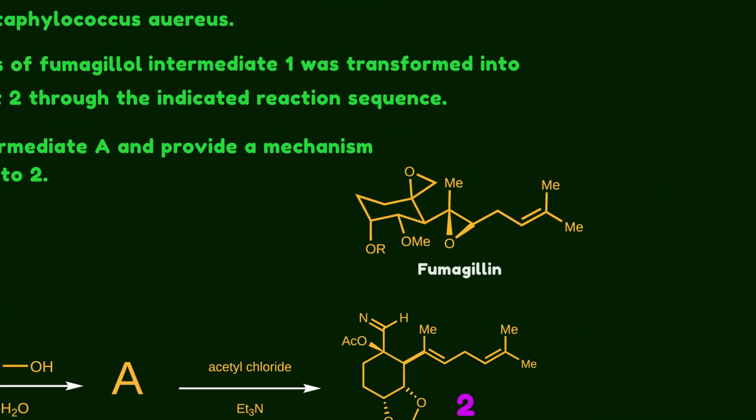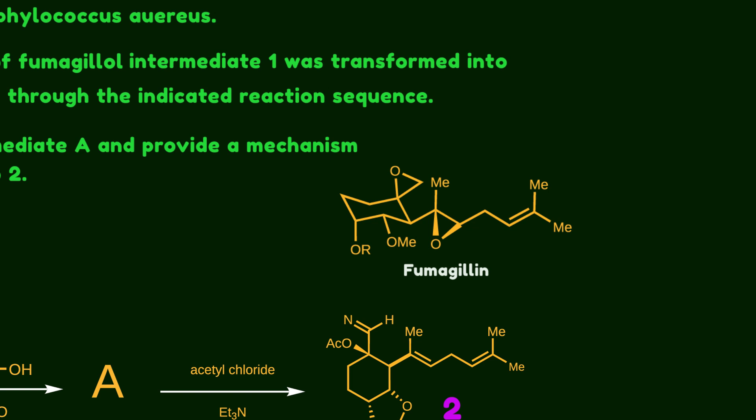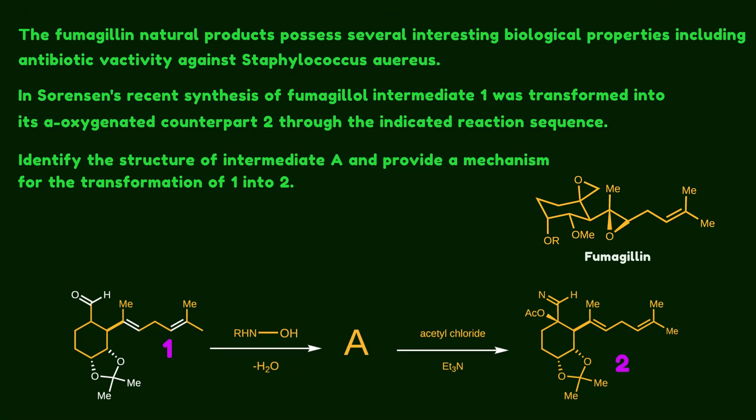Fiumicillin is a natural product which exhibits several interesting biological activities. In 1999, Sorensen's group represented an interesting approach for synthesizing these targets. This figure indicates one part of the synthesis. The question asks you what happened to compound 1 after treatment with hydroxylamine. Moreover, you should provide a reasonable mechanism for the whole transformation.